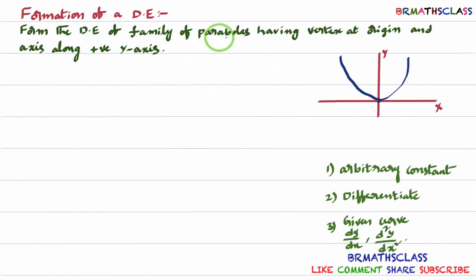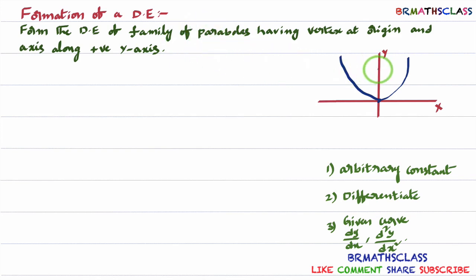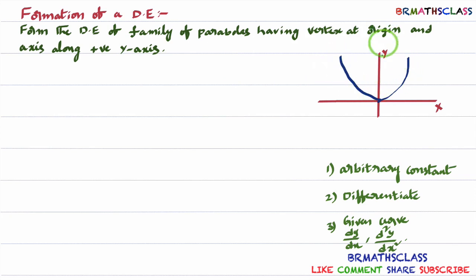They are specifying family of parabolas, but I considered only one parabola — one parabola is enough from that family to write its equation. If we take another parabola, it will be of different focus, but the vertex will be at origin only. So I consider only one parabola from that family having vertex at origin. All the parabolas whose vertex is at origin and axis along positive y-axis — the equation of such a parabola is x² = 4ay.